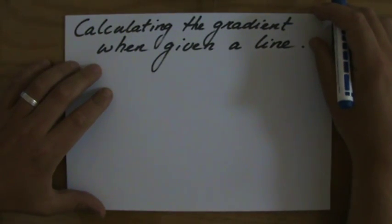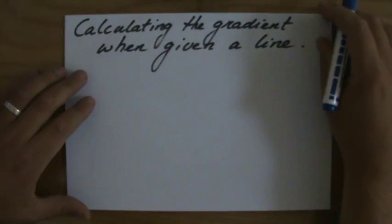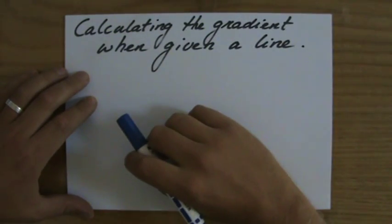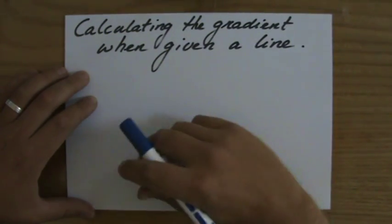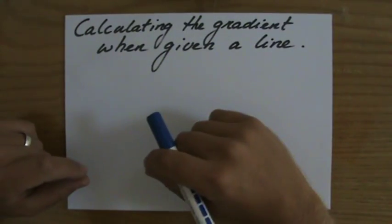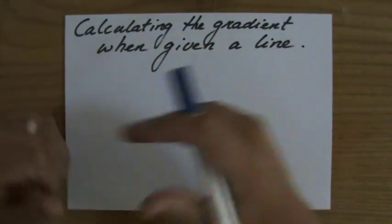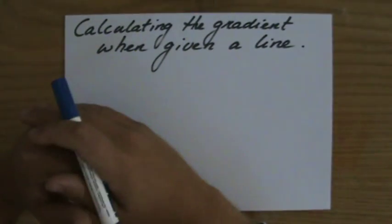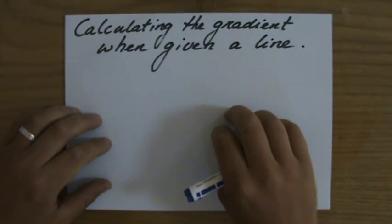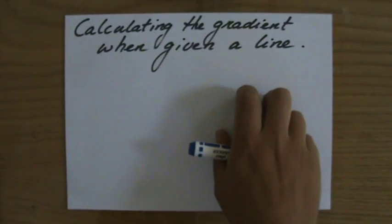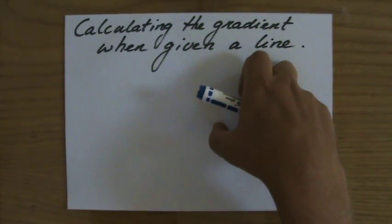So now we know what the gradient is of a line, of any function. Let's say something about the steepness, and we even know how to calculate the gradient when they give us two points, where we have said that the difference in the y direction divided by the difference in the x direction is going to give you the gradient. Well, what do you need to do when they only give you a line and you have to calculate the gradient?